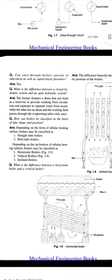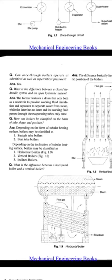How can boilers be classified on the basis of tube shape and position? Depending upon the tubular heating surface, boilers may be classified as straight tube boilers or bent tube boilers. Depending on the inclination of the tubular heating surface: horizontal boilers, vertical boilers, and inclined boilers.